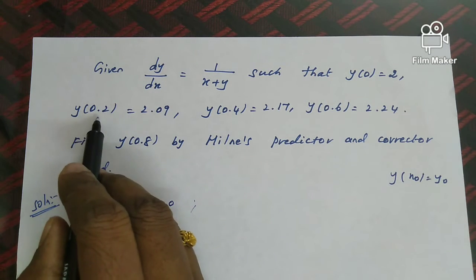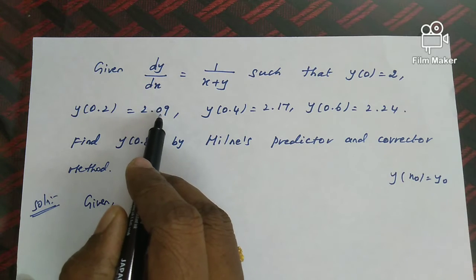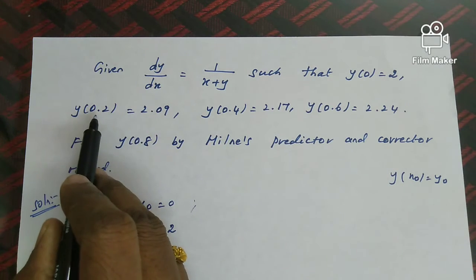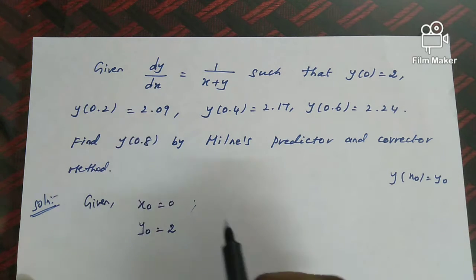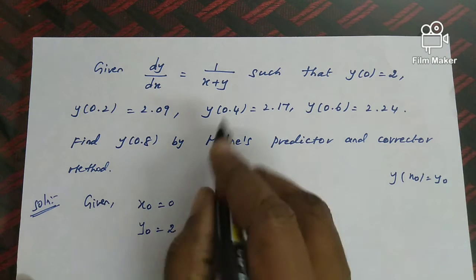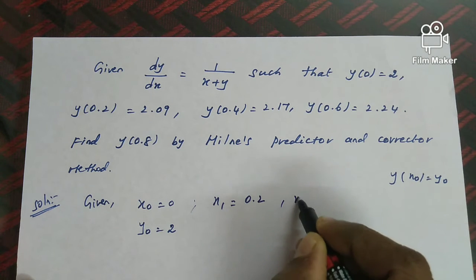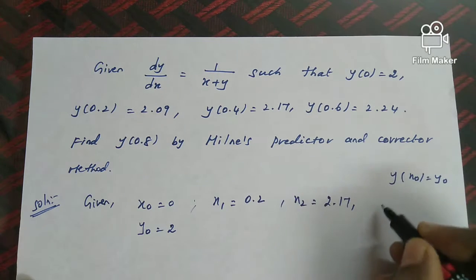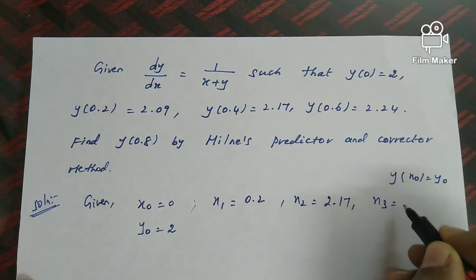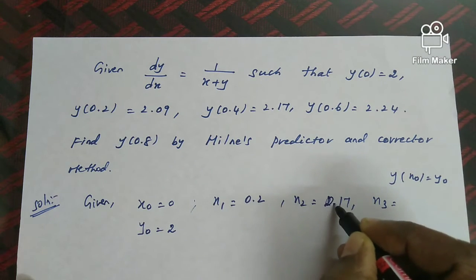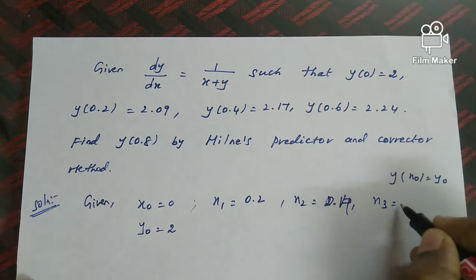Next, y(0.2) = 2.09 means y(x₁) = y₁, so x₁ = 0.2 and y₁ = 2.09. Similarly, x₂ = 0.4 with y₂ = 2.17, and x₃ = 0.6.